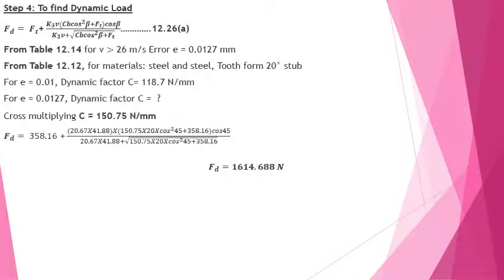Finding the dynamic load. The equation has a cos²(beta) term. From table 12.14, since velocity > 26 m/s, the error e = 0.0127 mm. From table 12.12, for steel and steel with 20 degree stub tooth form, at e = 0.01, dynamic factor C = 118.7 N/mm. For e = 0.0127, cross-multiplying gives C = 150.75 N/mm. Substituting into the dynamic load equation gives FD = 1614.68 N.